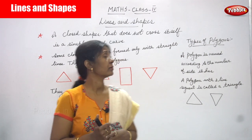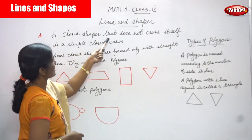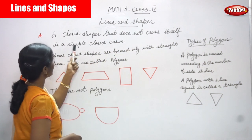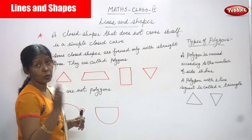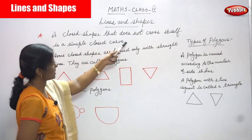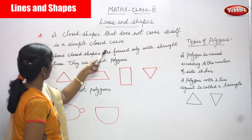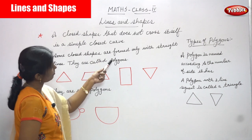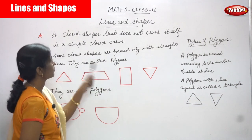A closed shape that does not cross itself is called a simple closed curve. Some closed shapes are formed only with straight lines — these are called polygons.